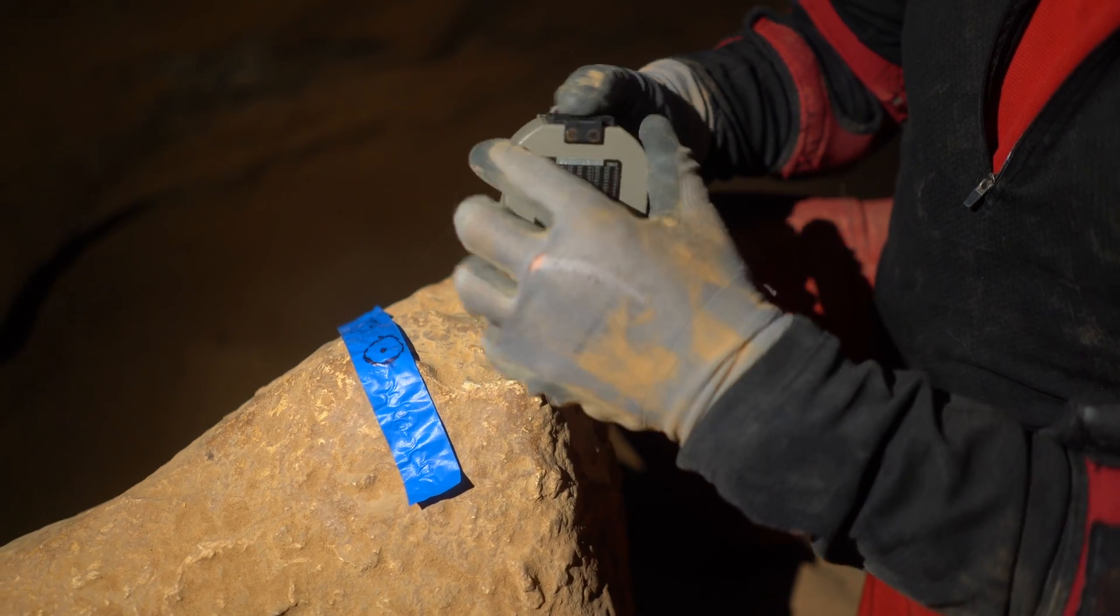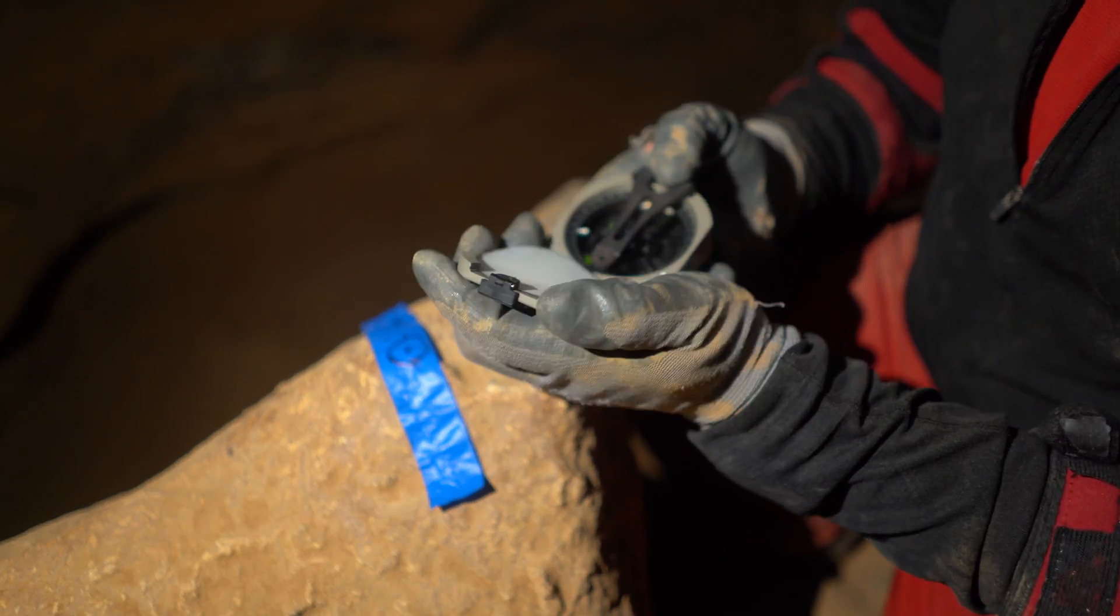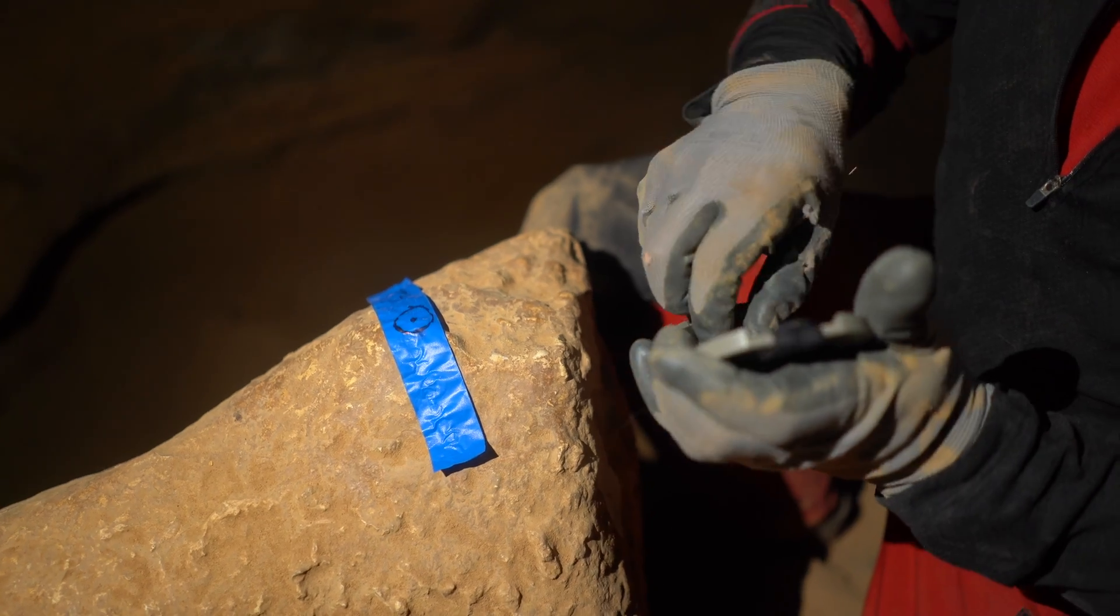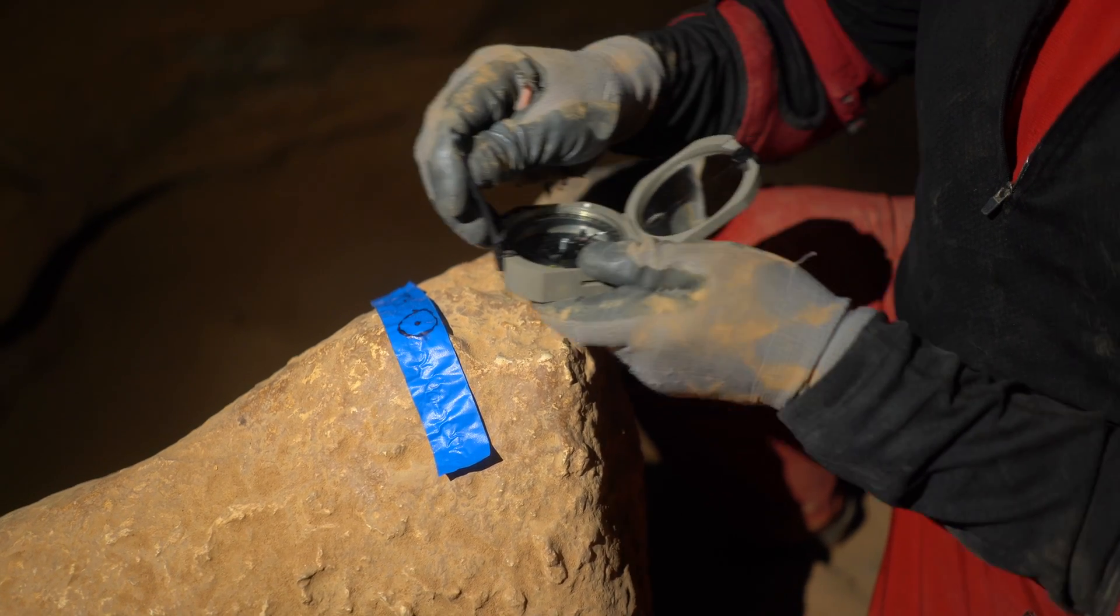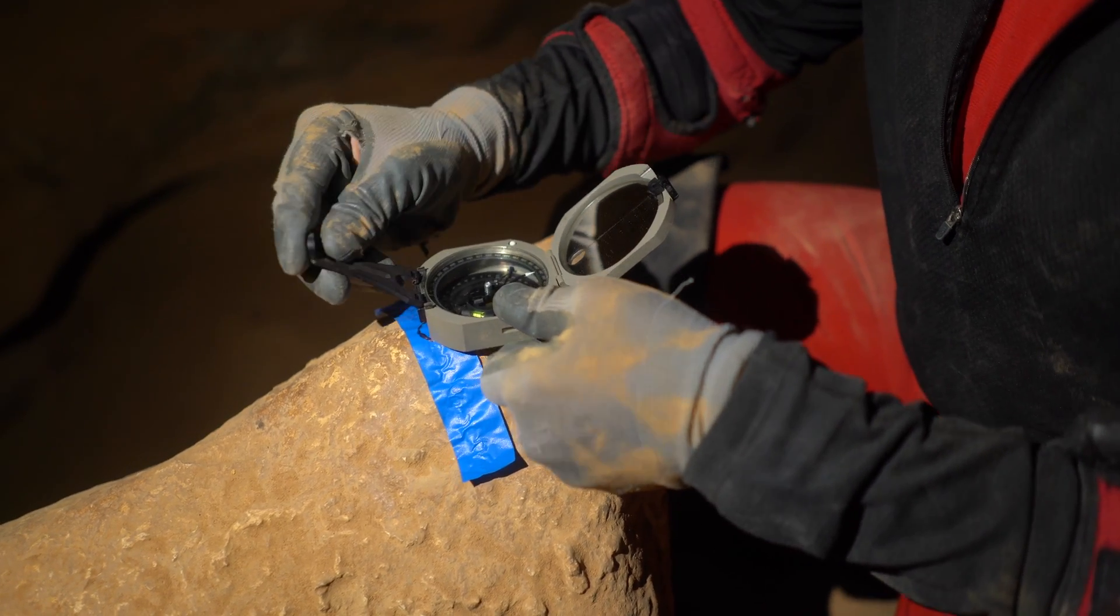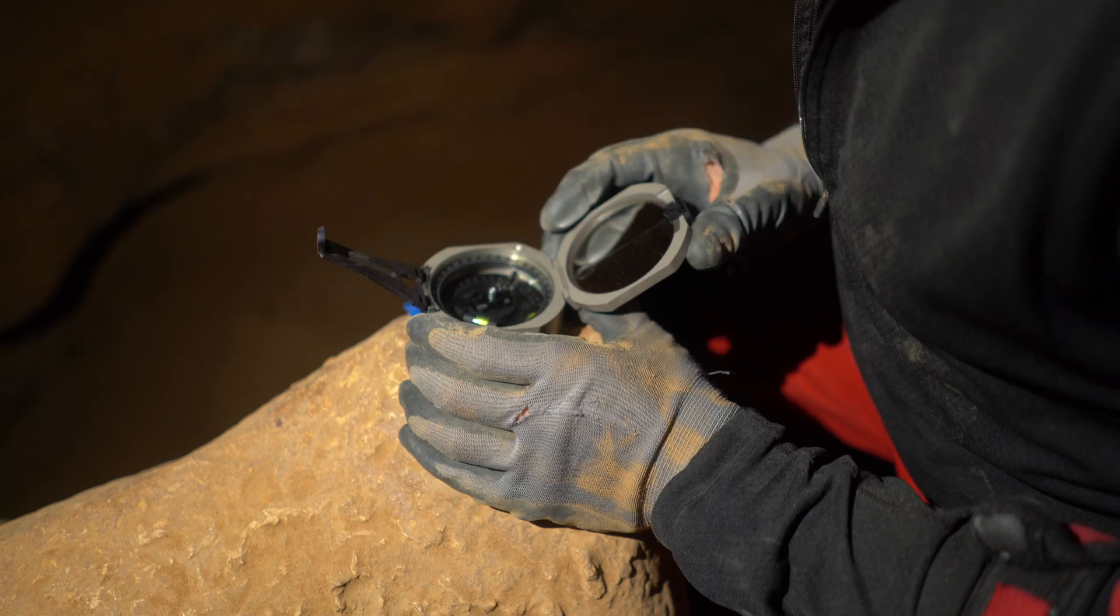The Brunton pocket transit, in one form or another, has been in production since 1894 and was the standard instrument used from the dawn of cave survey for collecting azimuth and inclination data. It's still manufactured today, though since the early 1980s it's very rarely used by cavers.